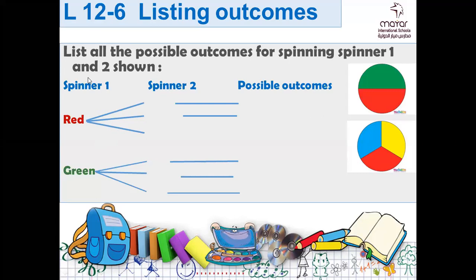In spinner one, how many colors do we have? Two — green and red. In spinner two, how many colors do we have? Three. Spinner two has blue, yellow, and red. So what are the possible outcomes we could have?